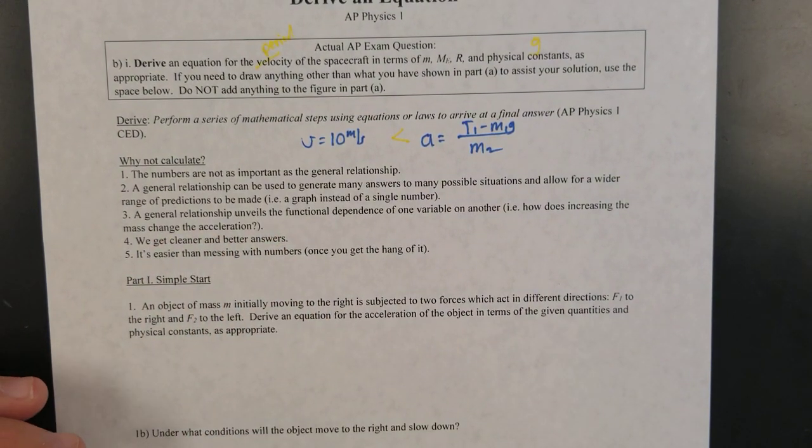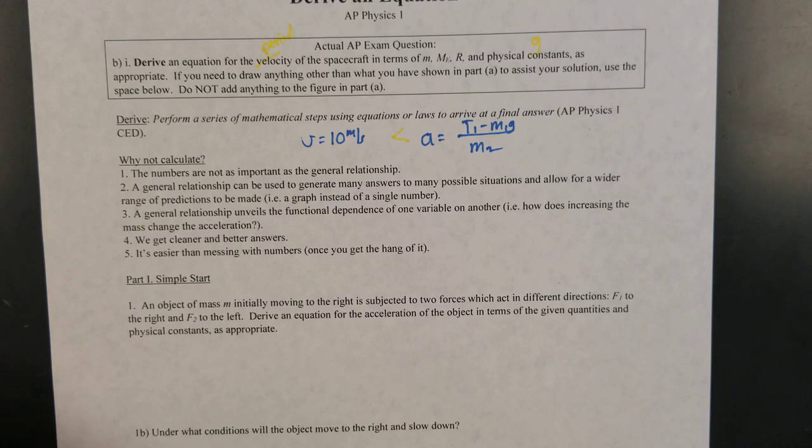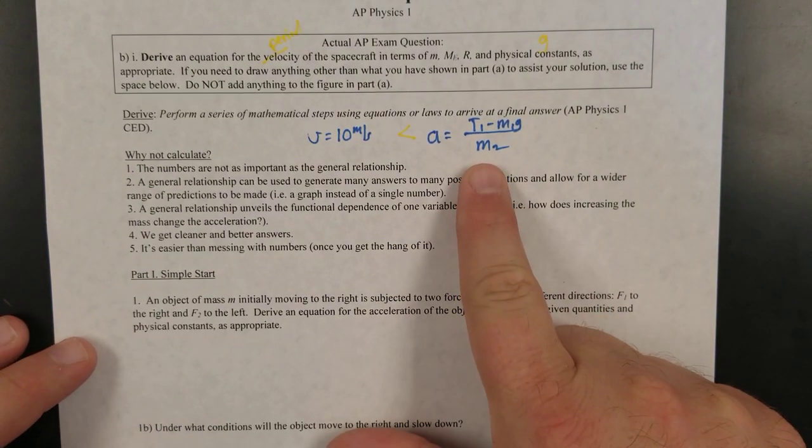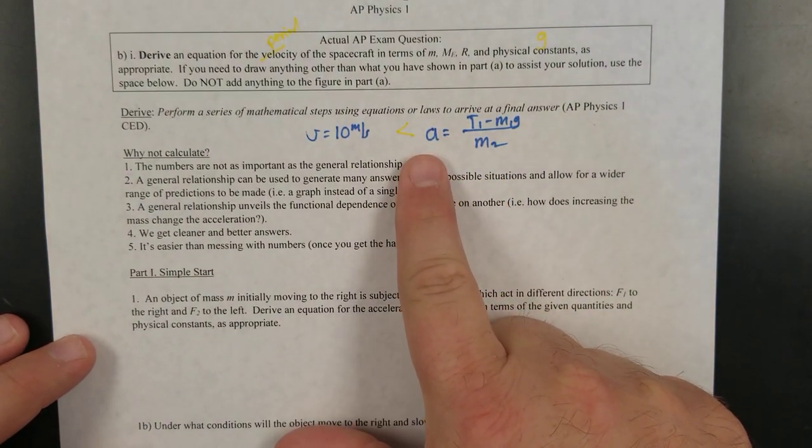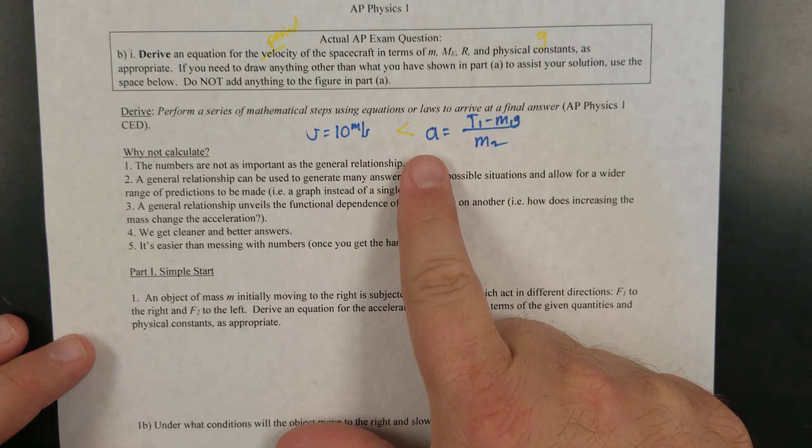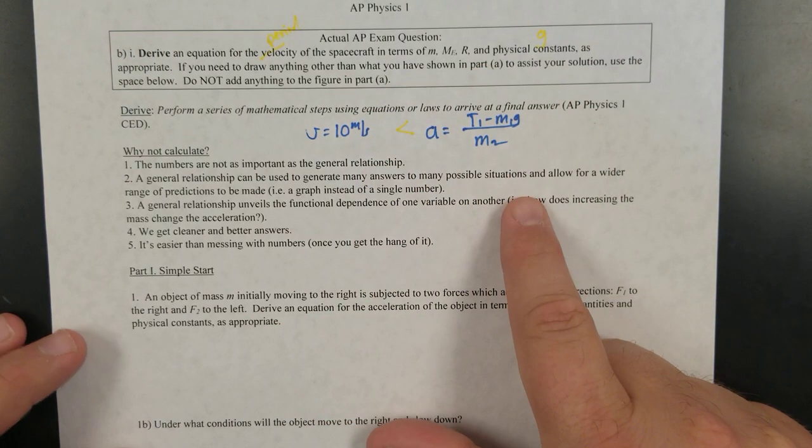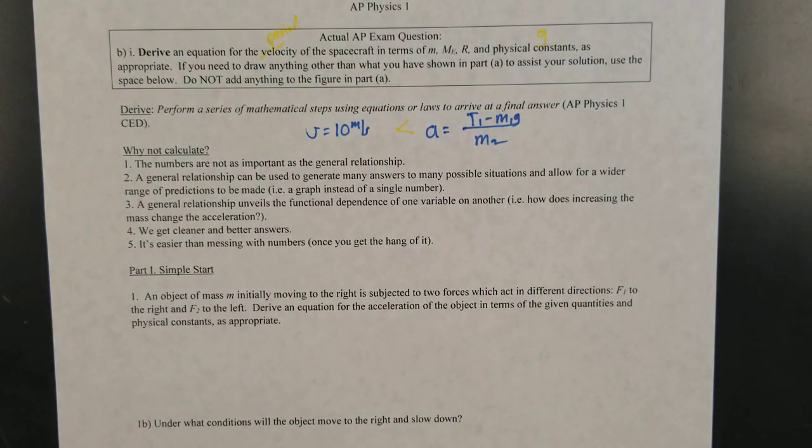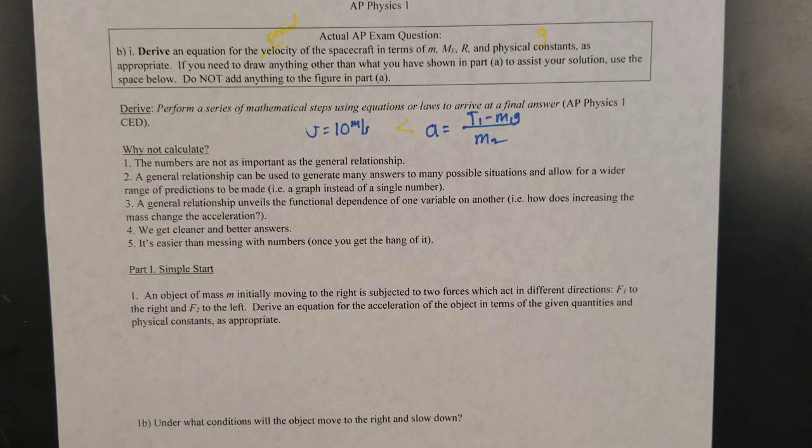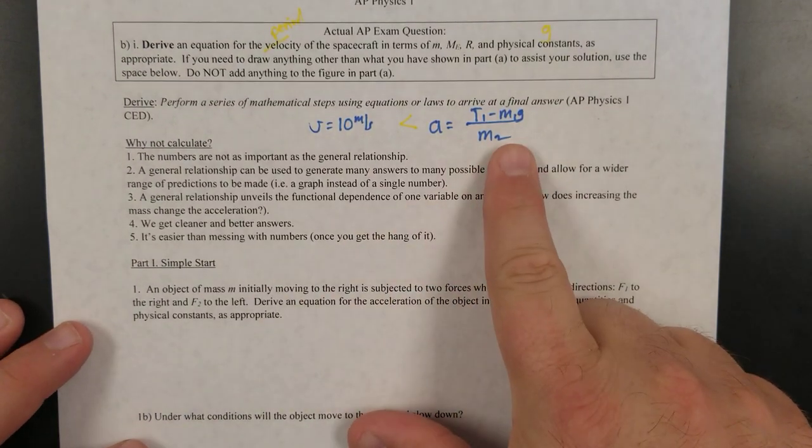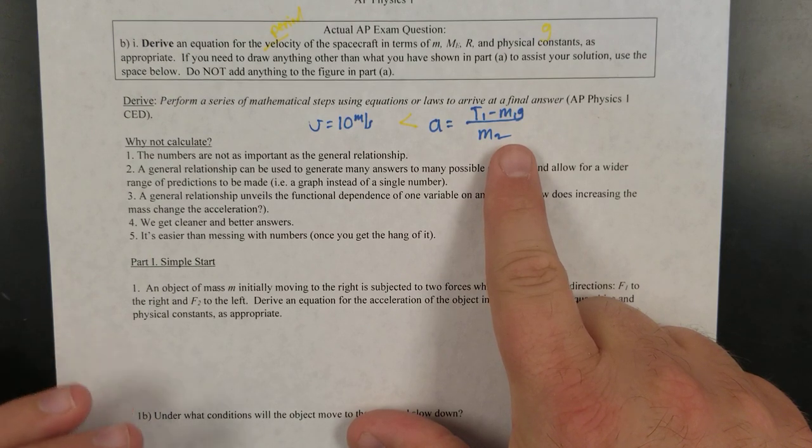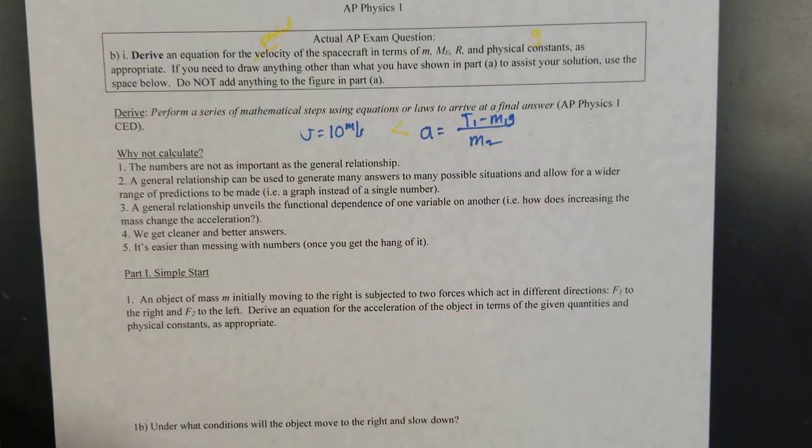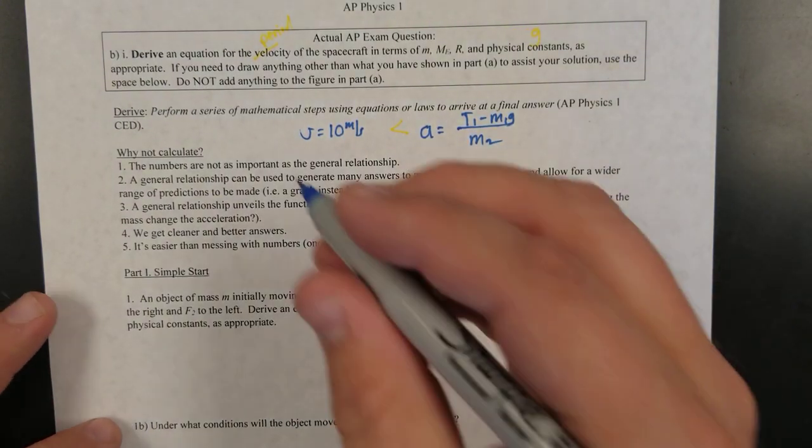Kind of in that same vein, a general relationship unveils the functional dependence of one variable on another. So if I increase this mass, how does that change the acceleration of this thing? You get a better answer usually when you do this. You don't have to worry about calculating things. You don't have to worry about rounding in between. And so this is actually an easier answer to understand and to agree on than something like V equals 10 meters per second.